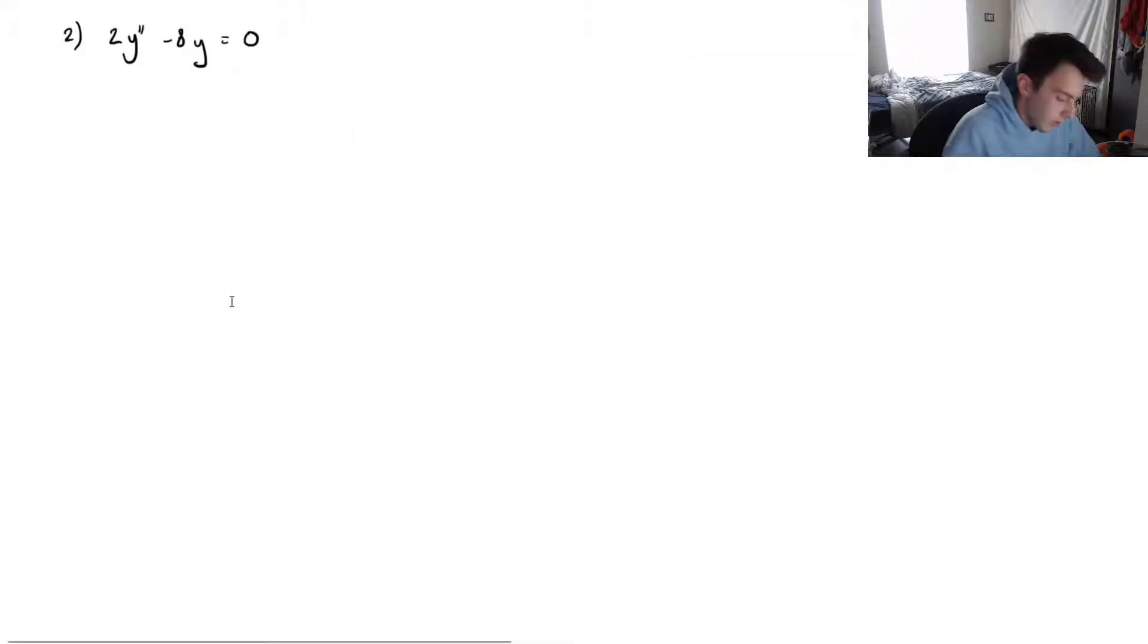This one. We've got 2y double prime minus 8y equals zero. So again, we've got constant coefficients, homogeneous, linear, very indicative to use an auxiliary equation to solve this. And for something like this, we only have two terms, you could use separation of variables if you'd like, but I'm showing you the power of auxiliary equations here, so that's what we'll use.